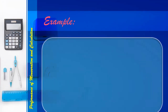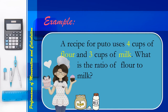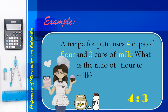Let's have an example. A recipe for puto uses 4 cups of flour and 3 cups of milk. What is the ratio of flour to milk? The ratio here is 4 is to 3 — 4 cups of flour and 3 cups of milk.